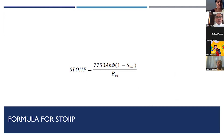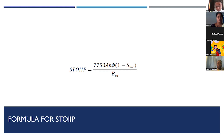So this is the formula used to calculate oil in place — stock tank barrels of oil in place (STOIIP). E and H is basically looking at the volume of the rock. BOI is the formation volume factor. SWC is the saturation of the rock. And Phi is the porosity of the rock. These are all factors that contribute to what the oil in place is in a reservoir.